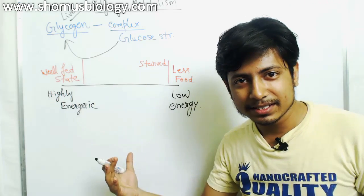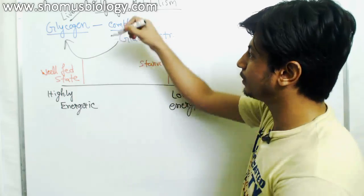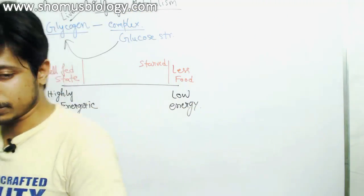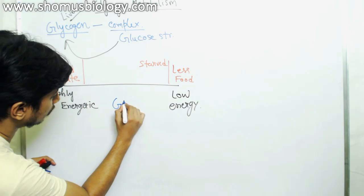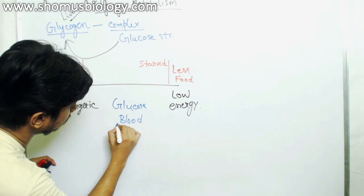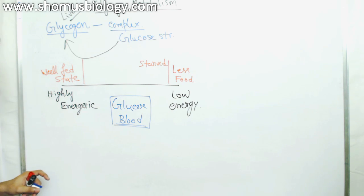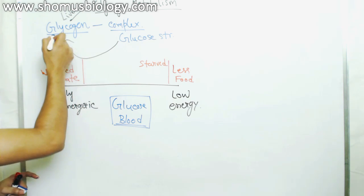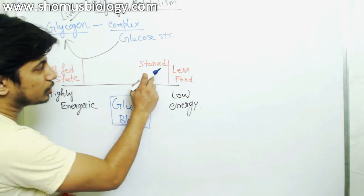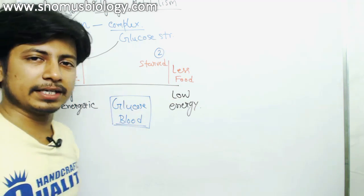This also balances the concentration of glucose in the bloodstream, which is very important for homeostasis. We are converting excess glucose into glycogen. In the starved state, we have low energy because we don't have sufficient glucose available.